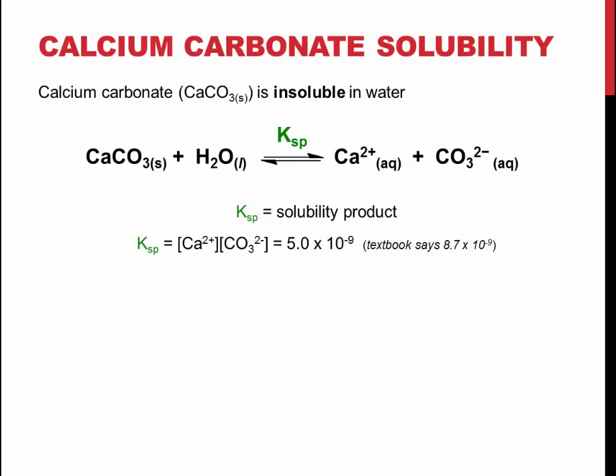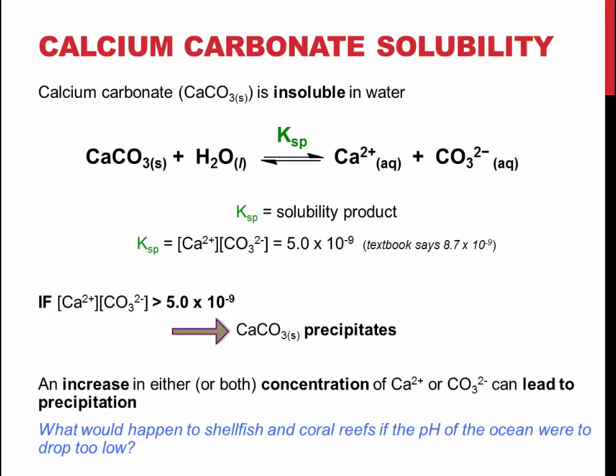The solubility product is 5.0 times 10 to the negative 9 for this reaction. If the concentration of ions becomes greater than this, the equilibrium shifts away from the side of the reaction where ions are produced, or back towards the reactants. This causes the formation of solid calcium carbonate.